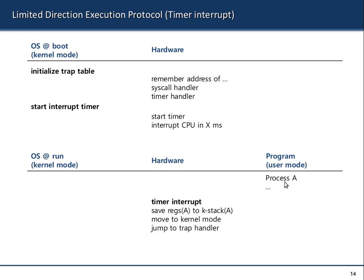The kernel has selected a process to run on the CPU. In this example, you have process A. After some time, the timer elapses. Process A is running, doing its job. Then suddenly the timer interrupts. What happens — these are the steps done by the x86 hardware via the task state segment: save the registers of A to the kernel stack of A, move to kernel mode, and jump to the trap handler.